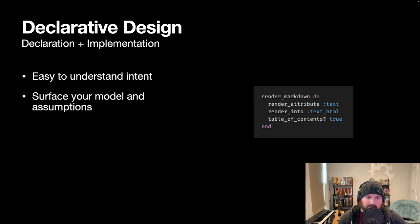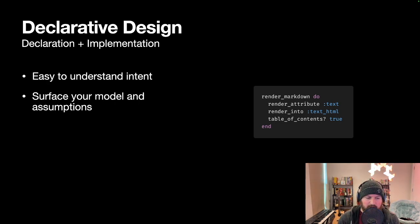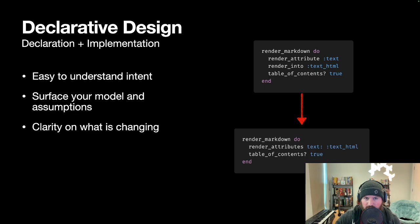Another important thing is that you surface your model — and most importantly your assumptions. How you think the world works is sort of first-classed with declarative design. This is the first iteration of the render markdown DSL we wrote for Ash HQ. We had a render attribute which said 'render the text attribute into text_html.' What we realized is some things need to render multiple attributes to HTML, so a single render attribute option wasn't enough. That was surfaced right at the front, and when we saw what we had done wrong, we knew exactly what to talk about and what was changing.